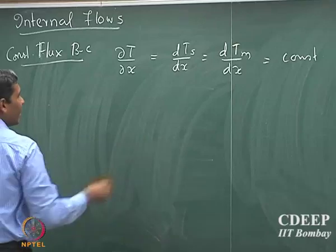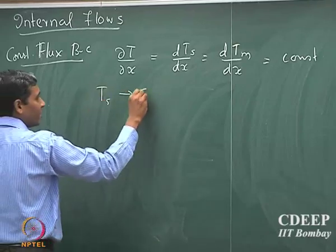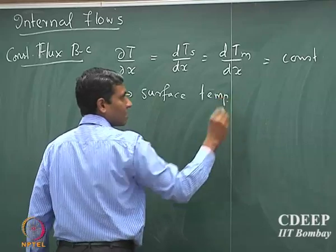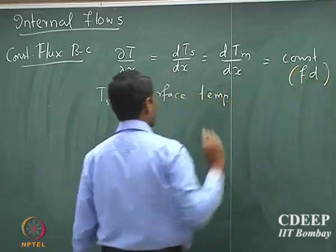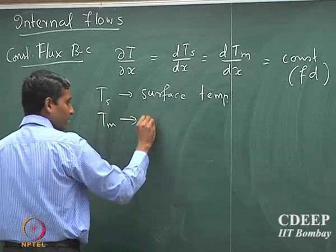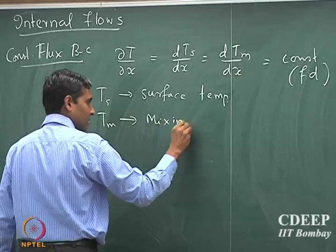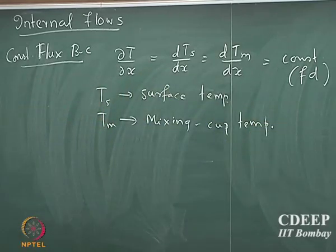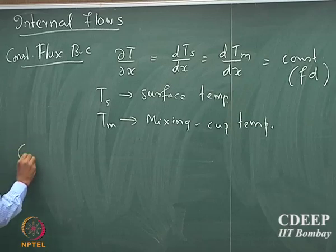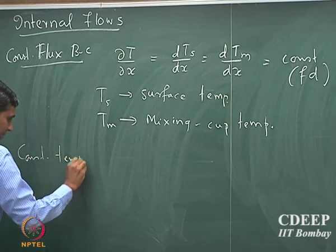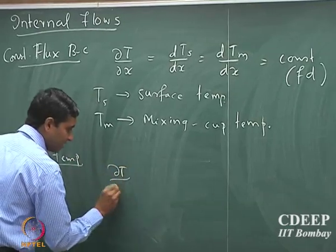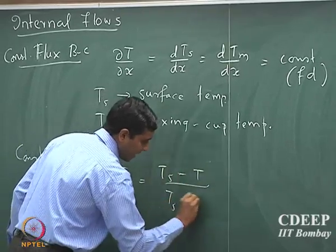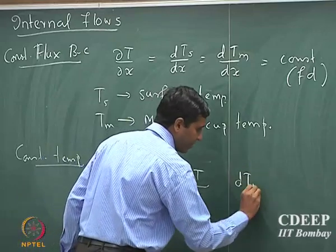Not just that — Ts is the surface temperature. This is the fully developed regime and Tm is the average or the mixing cup temperature. Similarly, we also showed that for constant temperature boundary conditions, dT/dx equals (Ts minus T) divided by (Ts minus Tm) into dTm/dx.